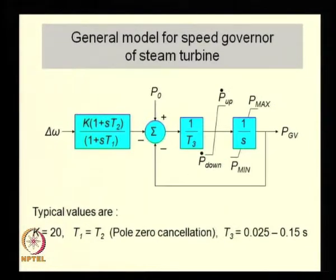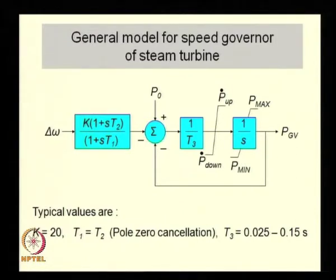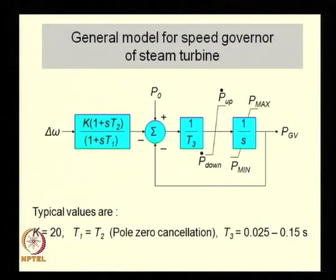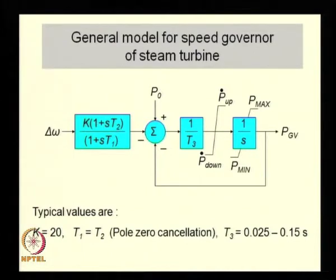One more model introduced here is a steam speed governor for a steam turbine. We are modeling the actuator as well as the speed governor control system. The gain of the speed governor is k. The model includes rate limiters — p_up and p_down — which come before the integrator and prevent the rate of change from exceeding the limiting values. PGV is the gate or valve position in per unit: a per-unit valve position of 1 means the valve is completely open and the machine will operate at rated megawatts.